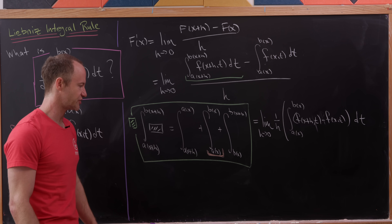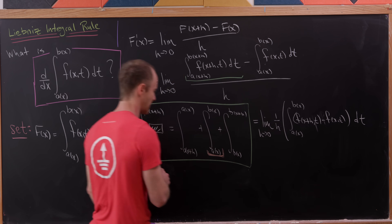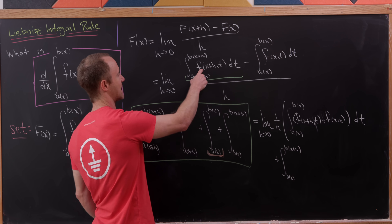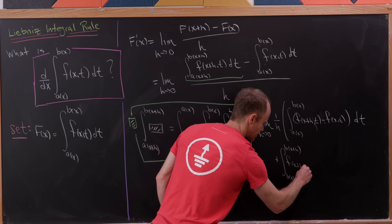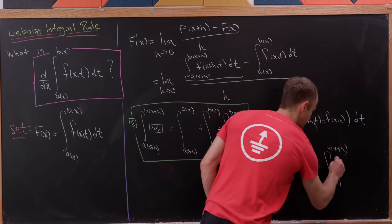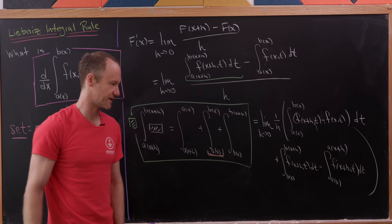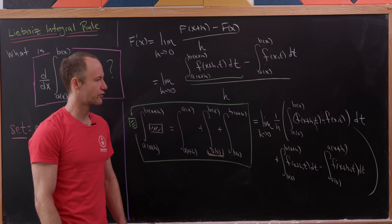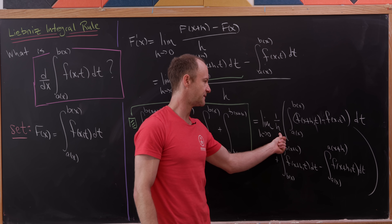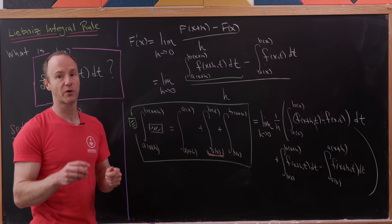We swap the bounds of integration of the a(x+h) term so that a(x+h) is on top, which introduces a minus sign. So we now have the integral from b(x) up to b(x+h) of f(x+h, t) dt, minus the integral from a(x) to a(x+h) of f(x+h, t) dt. Then we bring the one over h inside the first integral and distribute it through, splitting this limit into three separate limits — one for the first integral and one each for the other two — which we're allowed to do under the hypotheses of the Leibniz integral rule.